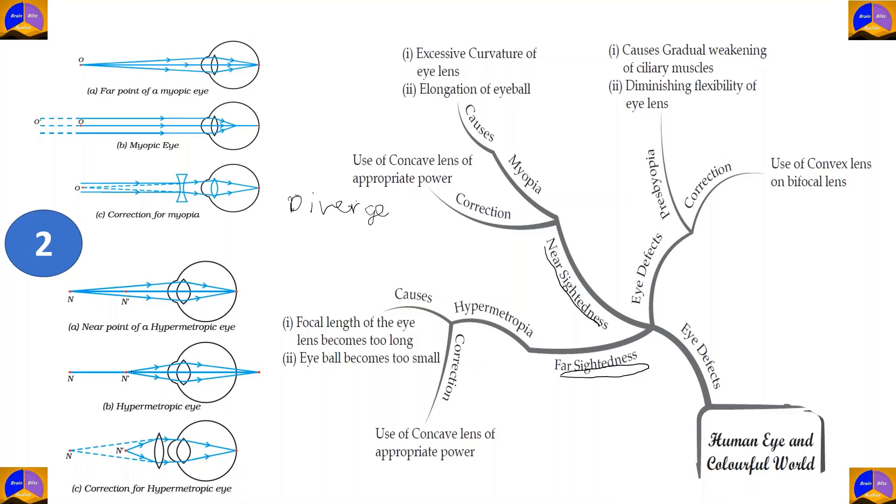When light rays emanate from the near point, they form an image behind the retina, which is not sensed. Using a convex lens of appropriate power helps us to mitigate the causes of hypermetropia, such as the focal length of the eye lens becoming too long or the eyeball becoming too small. Now, convex lens is converging. Therefore, it helps us to mitigate hypermetropia.